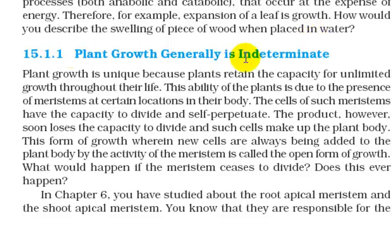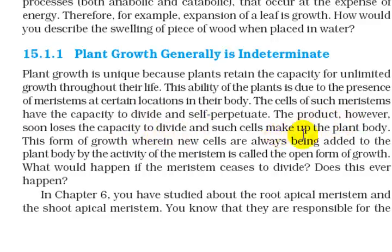Plant growth generally is indeterminate. Plants retain the capacity for unlimited growth throughout their life. This ability of the plants is due to the presence of meristems at certain locations in their body. The cells of such meristems have the capacity to divide and self-perpetuate. The product, however, soon loses the capacity to divide and such cells make up the plant body. This form of growth, wherein new cells are always being added to the plant body by the activity of the meristem, is called the open form of growth.